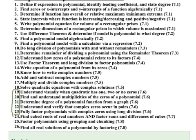Objective 19 is to understand visually when a quadratic has one, two, or no zeros — again, a review from Algebra 2. Number 20, find and understand multiplicities of the zeros of a polynomial; this may be a newer concept but not a difficult one. 21, determine the degree of a polynomial function from a graph. 22, understand and verify that complex zeros occur in pairs. And 23, fully factor polynomials with complex zeros using long division. We're ultimately working our way to Objective 23.